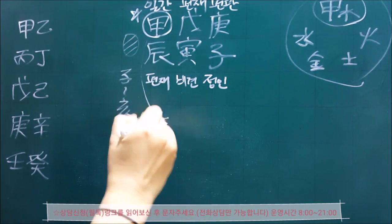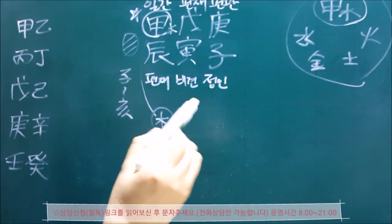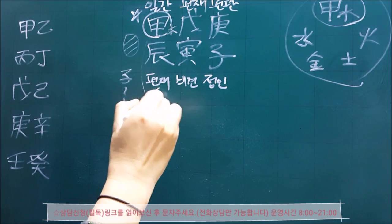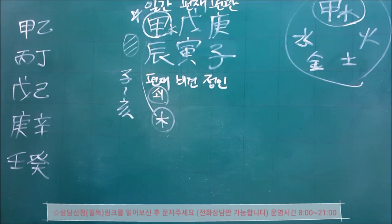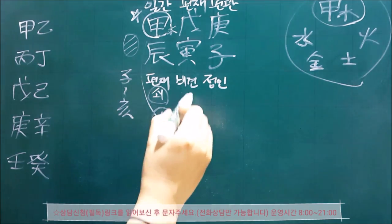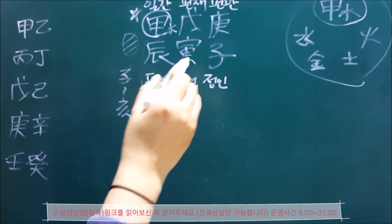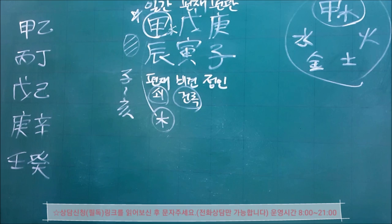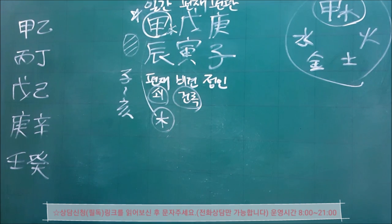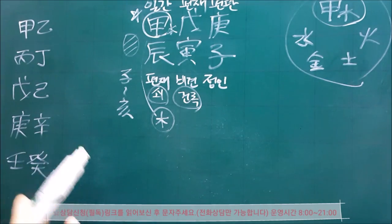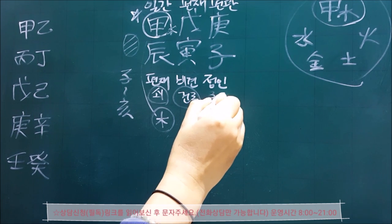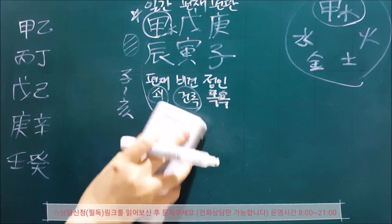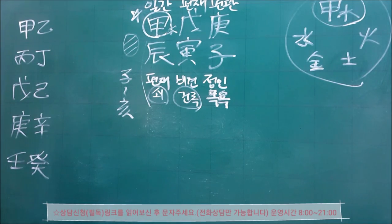갑목은 봄에 힘을 쓰는 갑목이거든요. 목은 인묘진이잖아요. 이때 건록·제왕·쇠의 단계를 거치게 됩니다. 인은 건록지, 묘는 제왕지, 진은 쇠지가 되겠죠. 그리고 자는 겨울의 글자로 해·자·축에서 장생·목욕·관대가 이어지거든요. 자는 목욕지가 됩니다. 해수가 장생지가 되는 거고요.